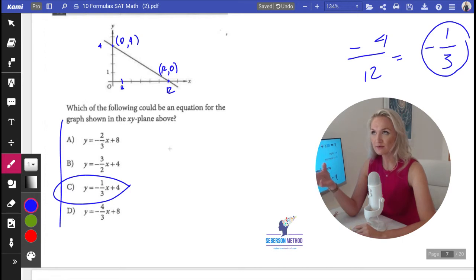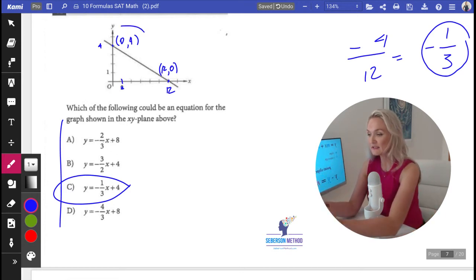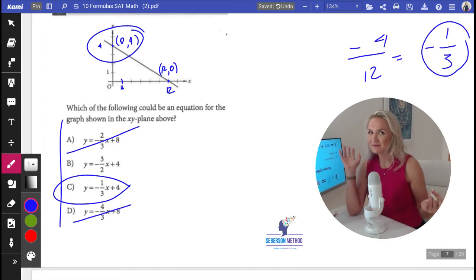What I can also do is I can start with looking at the y intercept because clearly here we have the y intercept 0 comma 4. And I can look at the answer choices and then eliminate A and D. But I didn't really decide to go that route because I knew if I eliminate those, then I'm going to be left with two answer choices and I have to calculate the slope anyways.